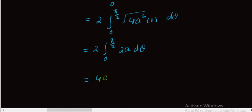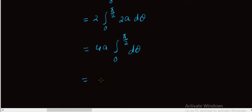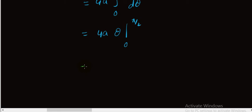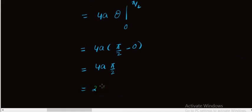This simplifies to 4a times the integral from 0 to pi by 2 of dθ. Integrating dθ gives theta, evaluated from 0 to pi by 2, which equals 4a times pi by 2, and this can be written as 2aπ. So our arc length is equal to 2aπ.